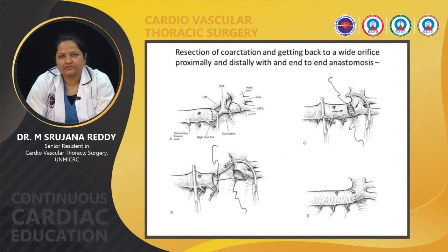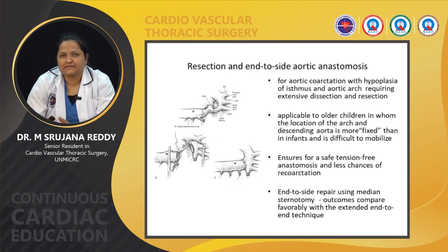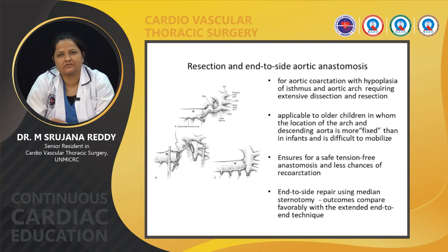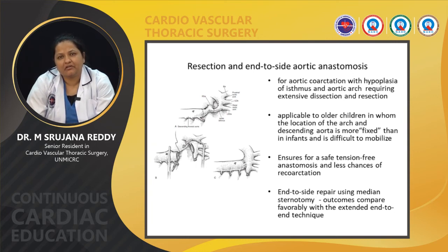Resection with extended end-to-end anastomosis involves excision of the coarctated segment followed by a wide anastomosis proximally and distally, usually done in neonates and infants. End-to-side aortic anastomosis is usually done for associated hypoplasia of the isthmus and aortic arch, applicable to older children who have a fixed descending aorta that is difficult to mobilize, providing a tension-free anastomosis with less chance of recoarctation.